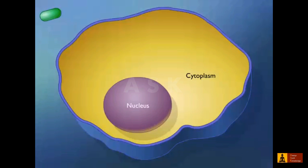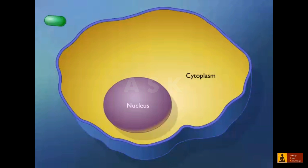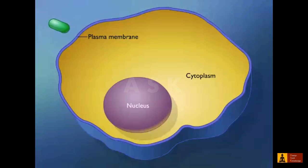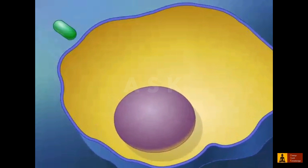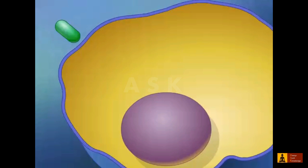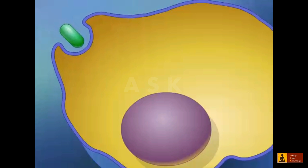The substances taken in by single-celled organisms are often particles or large polar molecules that cannot cross the hydrophobic plasma membrane. Many single-celled eukaryotes employ endocytosis to ingest such food particles. In this process, the plasma membrane extends outward and surrounds the food particle.